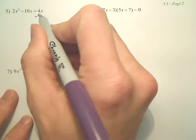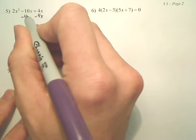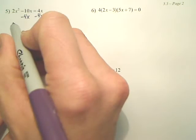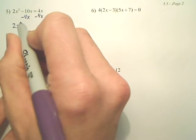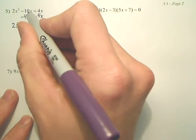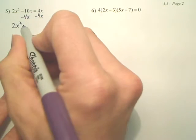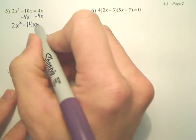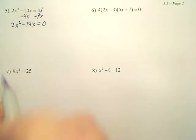So basically we've got to move this 4x over. When I do that, I now have 2x squared, and then negative 10x minus 4x is minus 14x, and then that cancels, leaving me zero.